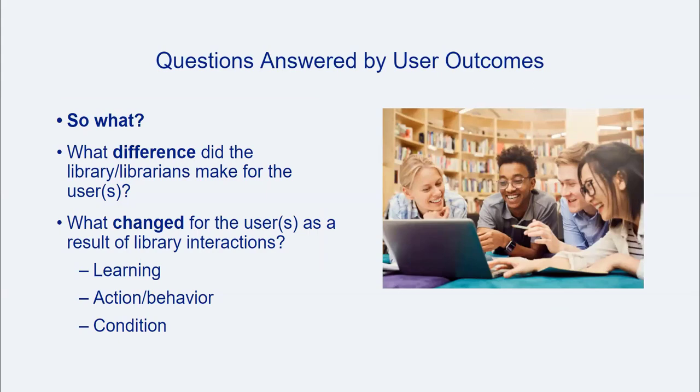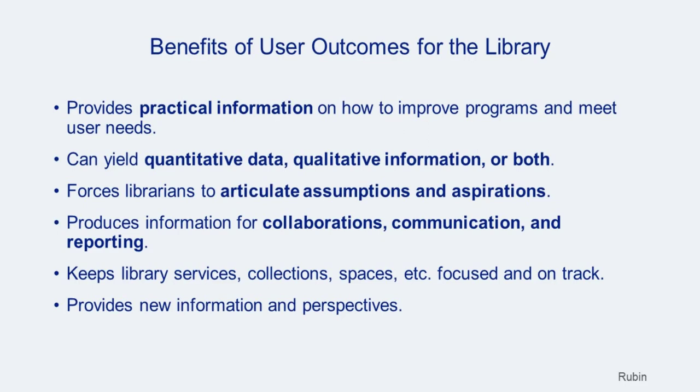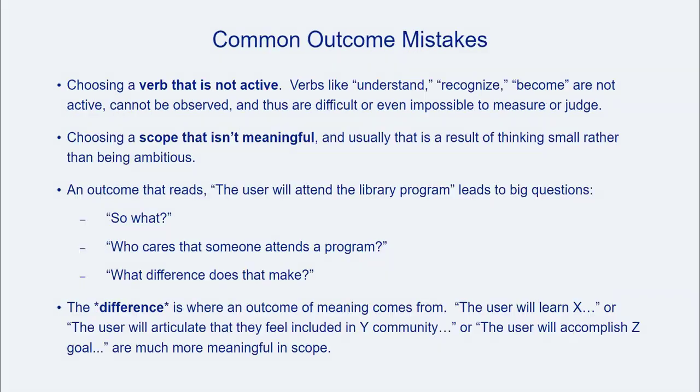Now what can we do with assessments guided by a focus on user outcomes? First, we can begin to answer 'so what' questions about library services, resources, and spaces. We can learn more about what difference libraries make for users in a variety of ways. Knowing about the difference made by libraries and librarians gives us practical information for service improvement and meeting user needs, allows us an opportunity to clarify our aspirations around support for users, and provides information essential for building partnerships and maintaining effective user communications. This kind of assessment keeps us on track toward our goals, and by centering users, we keep our mental doors open to getting new information and perspectives.